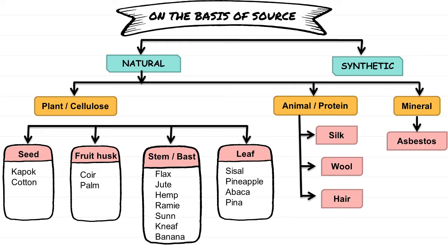On the basis of source, fibers are of two types: natural and synthetic. In natural fibers, there are plant, animal, and mineral. In plant fibers, we have seeds — kapok and cotton; fruit husk — coir and palm; stem and bast fibers — flax, jute, hemp, remy, sun, kenaf, banana; and leaf fibers — sisal, pineapple, abaka, and pina. Animal fibers, which we also call protein fibers, include silk, wool, and hair fibers. The last natural type is mineral fiber — asbestos.